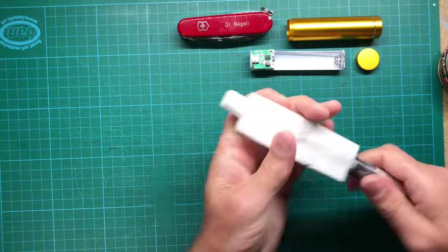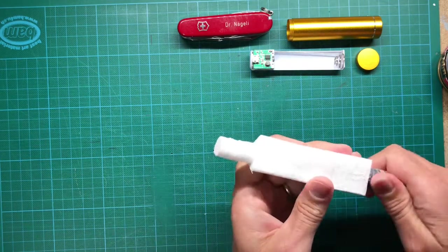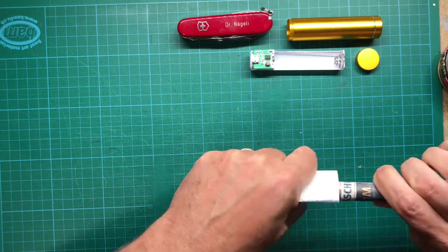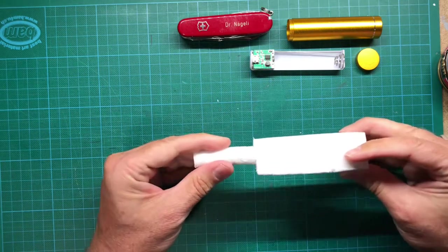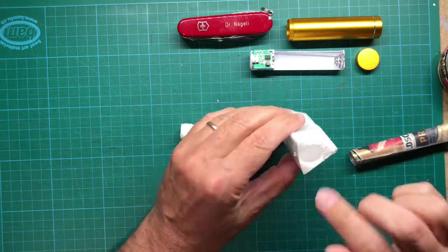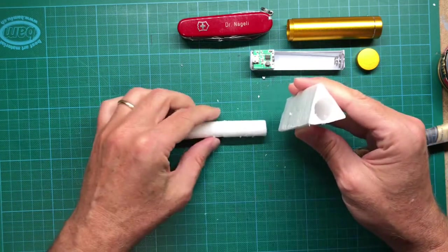And voila! The styrofoam is coming out of your block. So that was the trick I wanted to show you. The next part is quite easy.